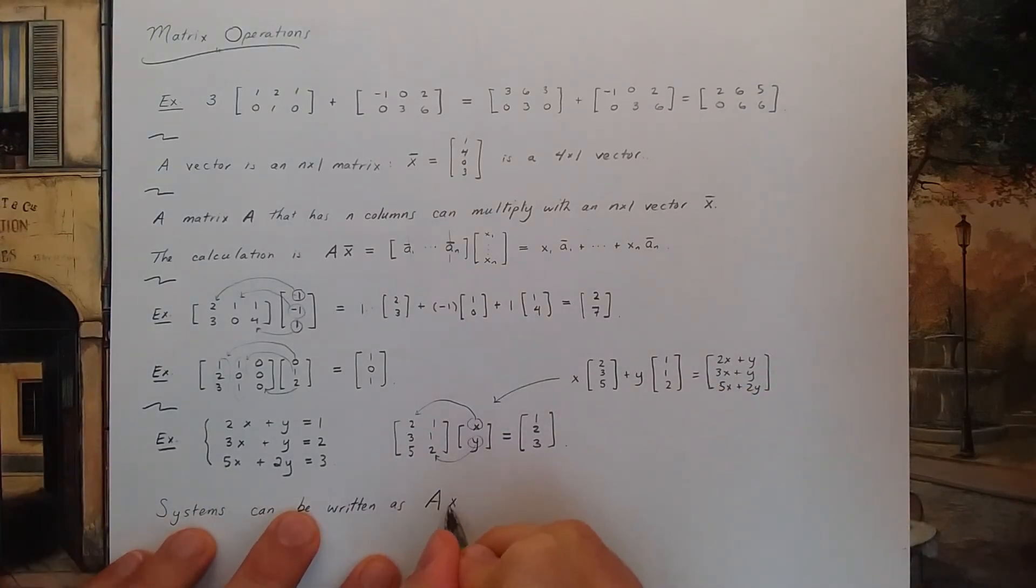A times a vector x is another vector b. So this is the matrix A in the previous example. This is the vector x. The vector x is usually a vector of unknown constants that we'd like to find.